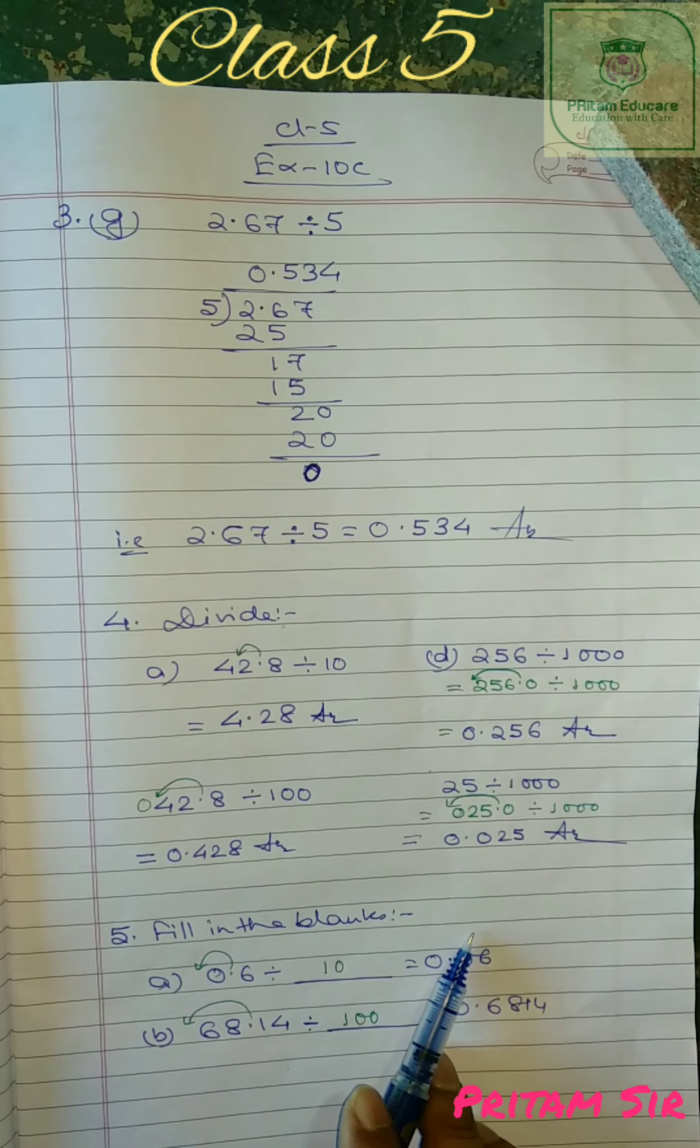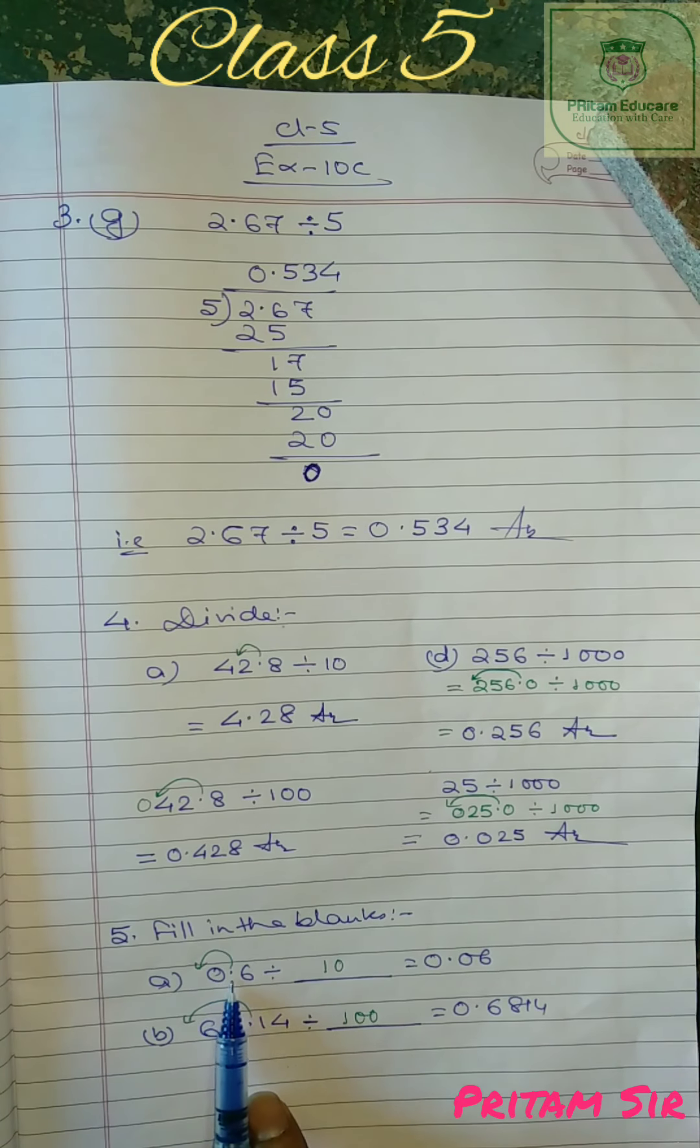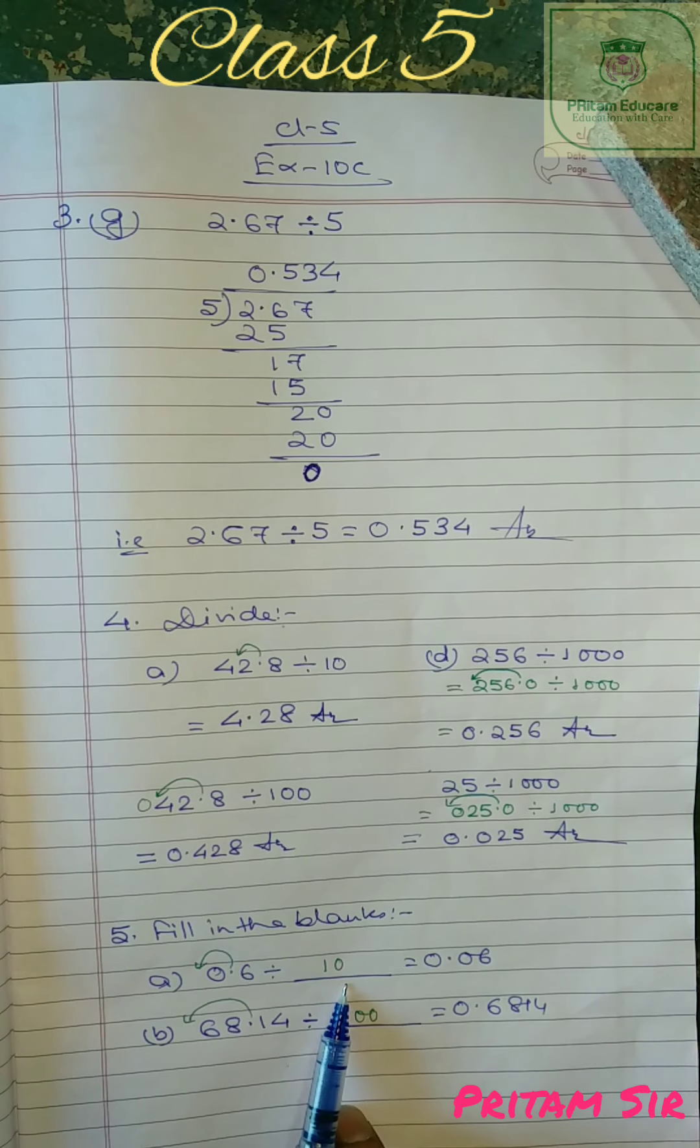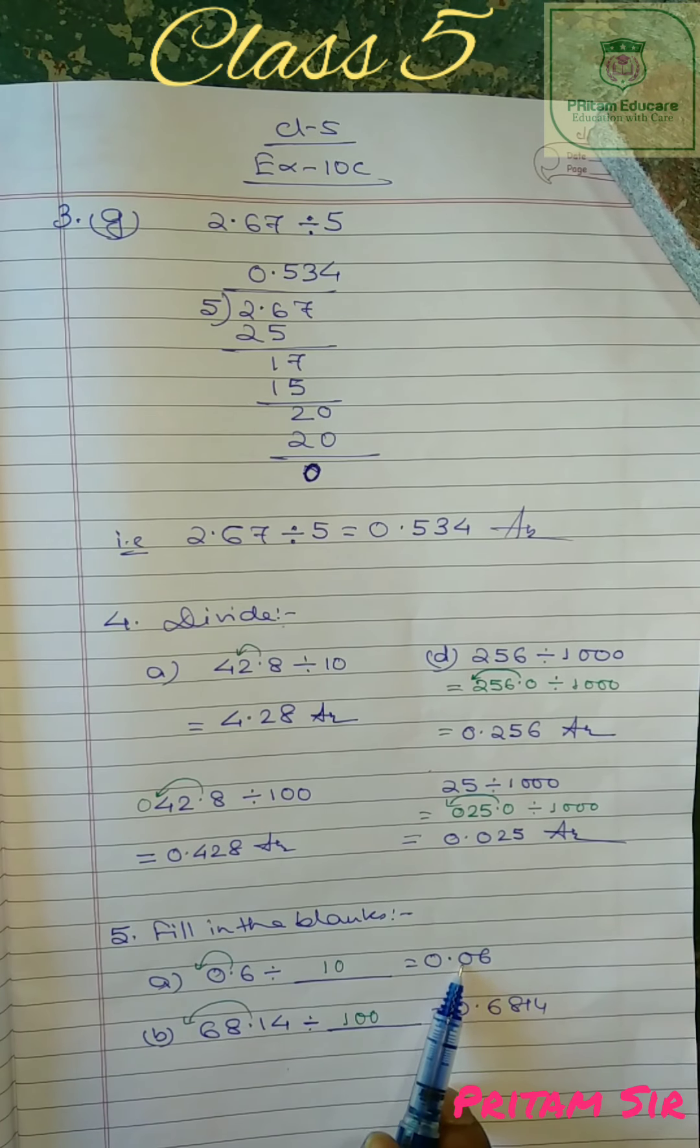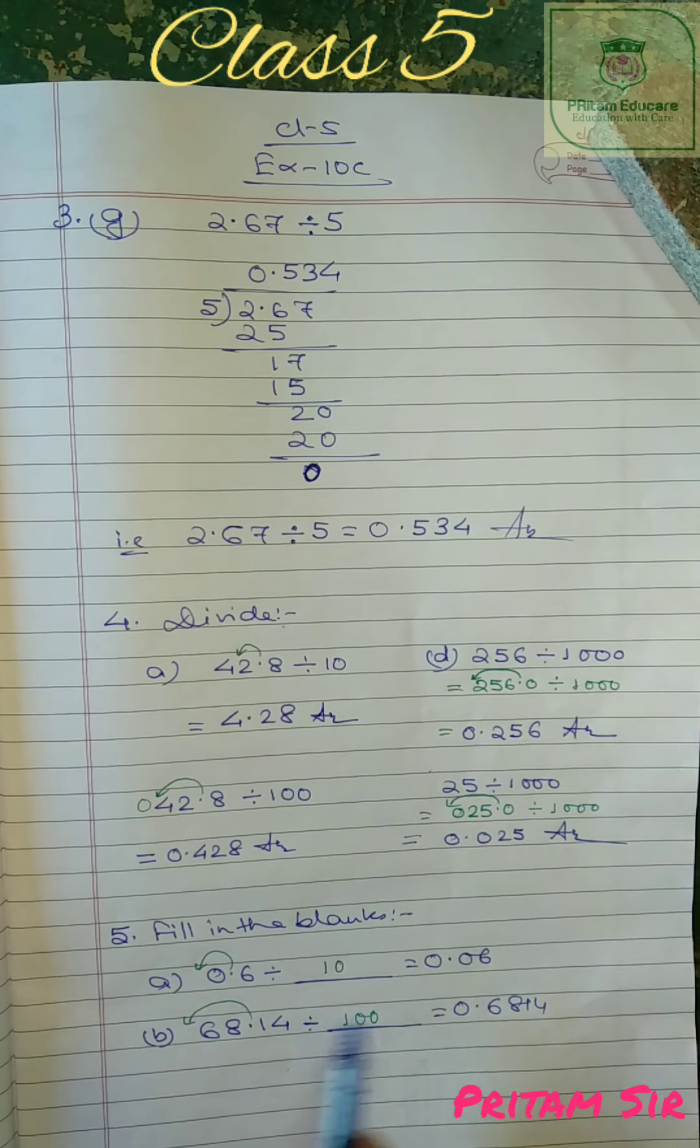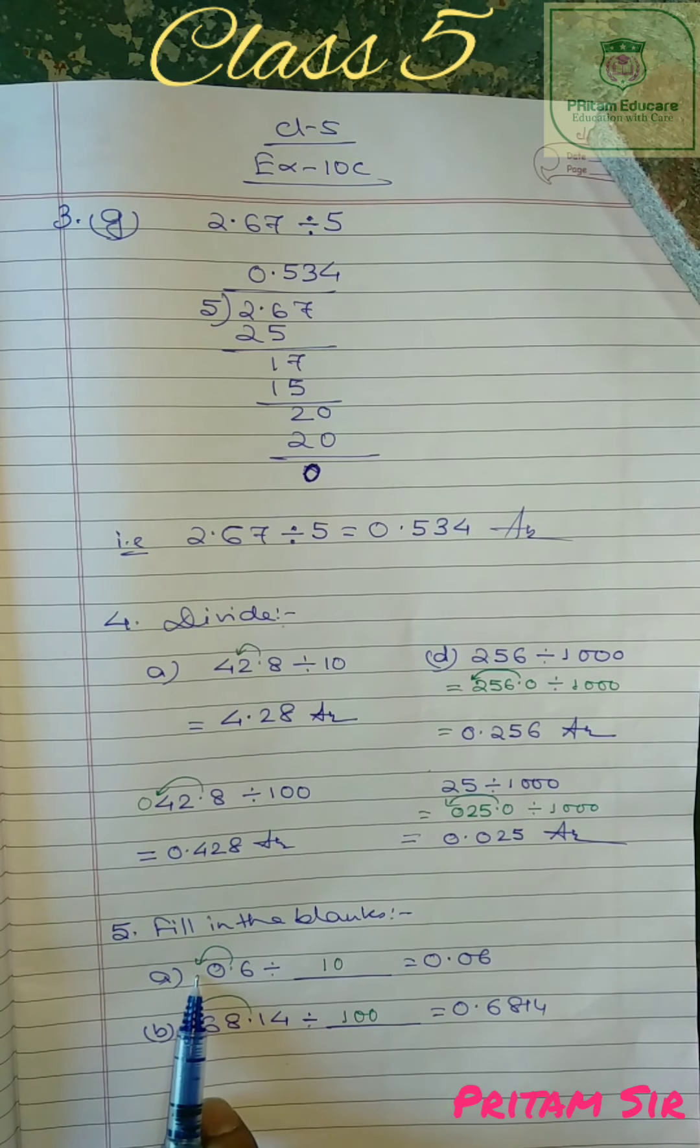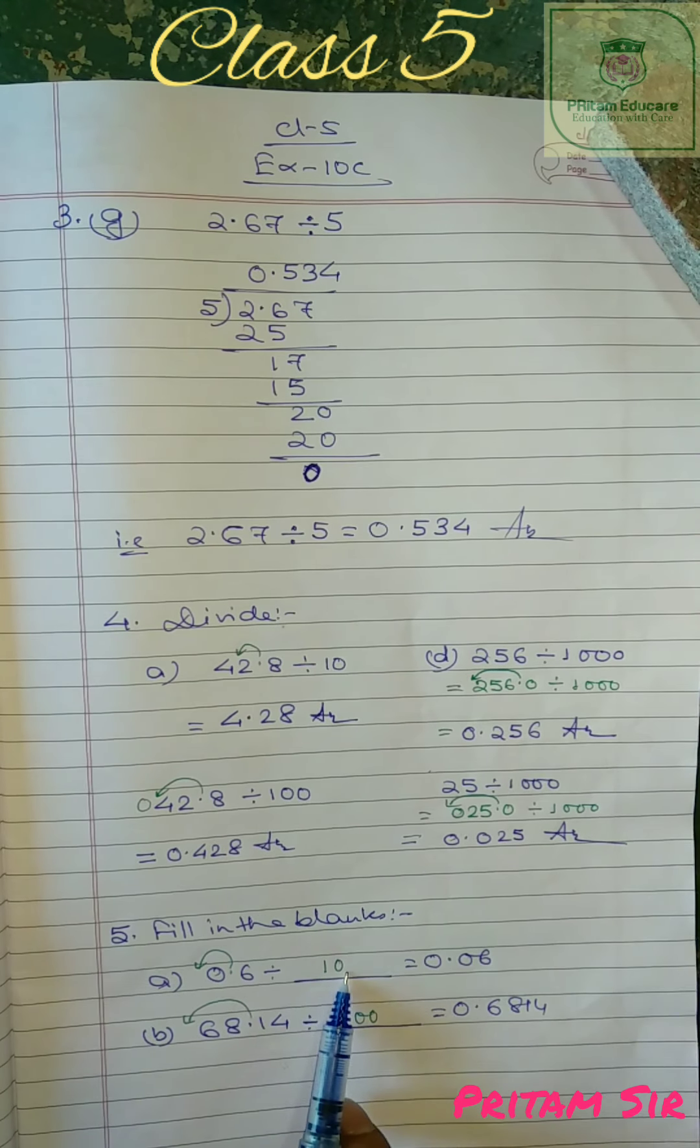Now fill in the blanks. Question number five is fill in the blanks. A number is 0.6 divided by blank. So 0.06. So as we can see, answer is in between 0.6 and 0.0 came. So two digits here, here is one digit. That means this decimal is shifted to left hand side naturally. So 06. So one digit shifted means 10.